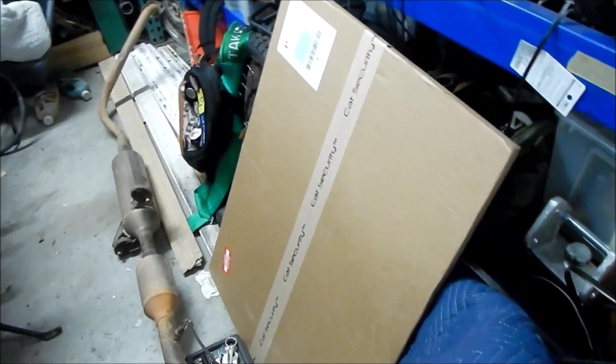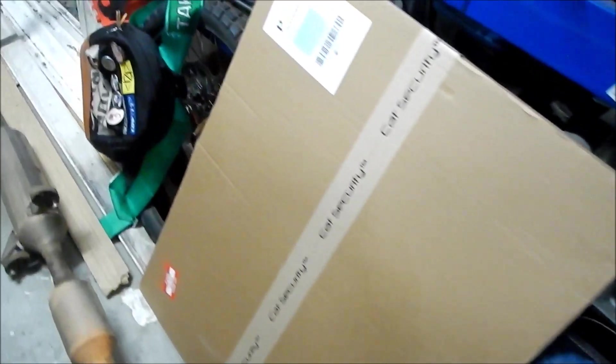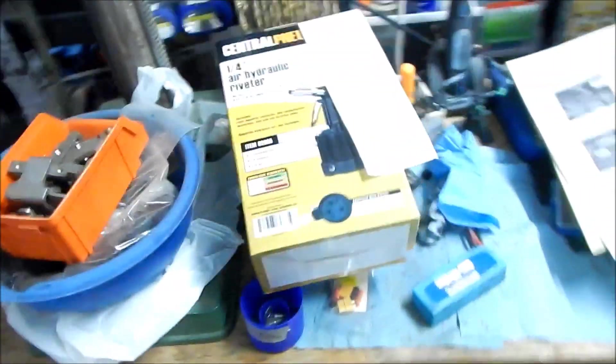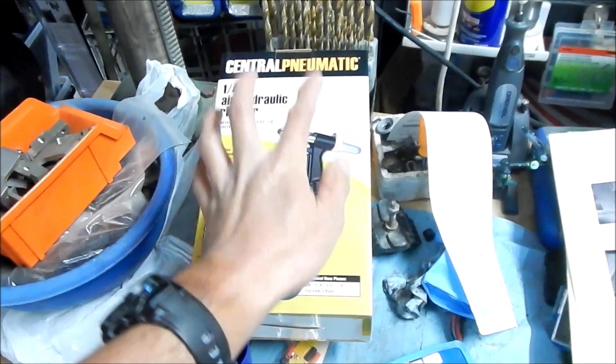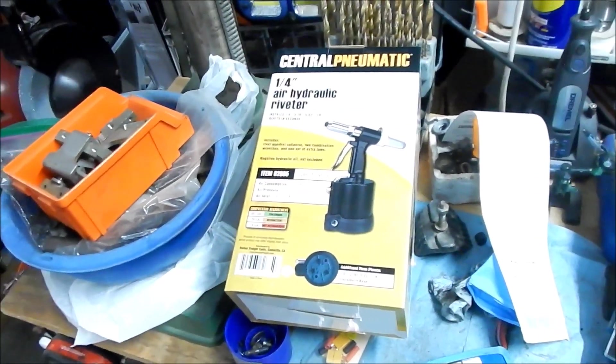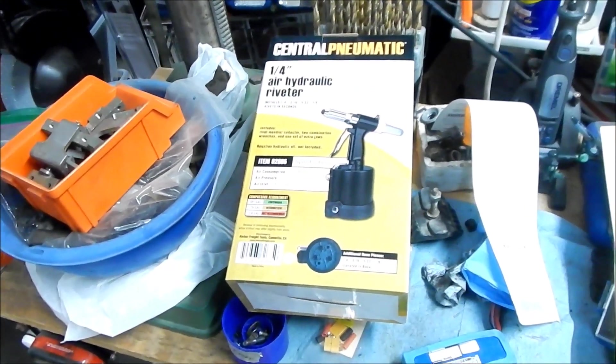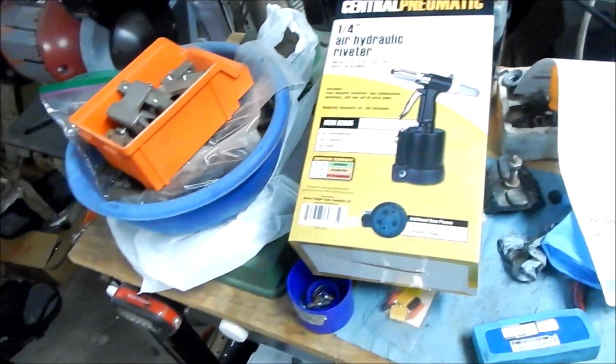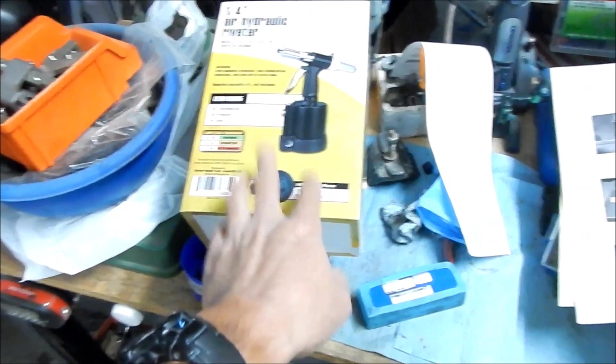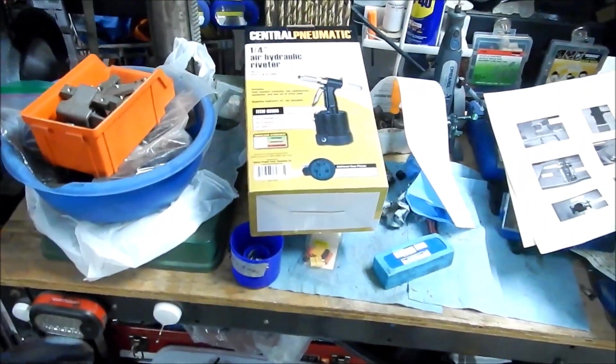I also did buy a new rivet gun. I bought a Harbor Freight hydraulic or air hydraulic riveter. So that should make the job a lot easier because I was having trouble with the hand riveter because there's not a lot of space to work underneath the car. This should make it a lot easier. I hope. So we'll get our money's worth out of that. I can use it for other projects and stuff. So all right. Thanks for watching. Hades me out.